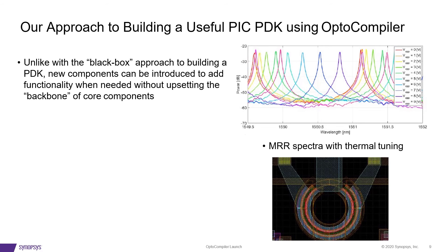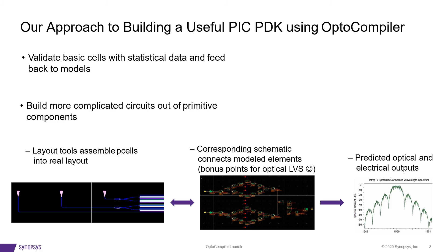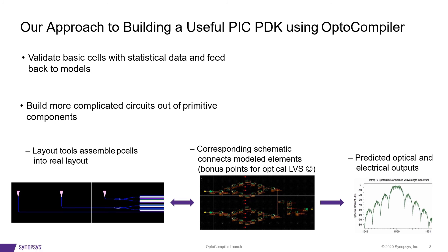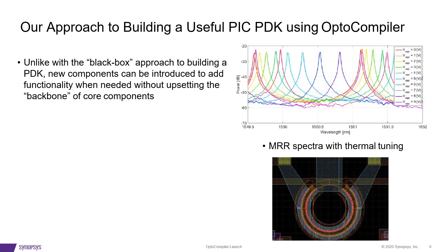Having these primitive components also enables you to not have to make big changes when you add or change the process. For example, micro ring resonators — this isn't currently in our PDK, but we've manufactured and measured them. Adding something like this is pretty straightforward: it's just another primitive element. If you can add a model behind it, you can plug it right into all the other elements, just like adding a new resistor or capacitor to your list of devices on the electronic side.